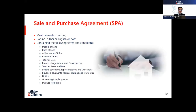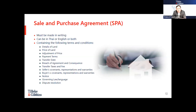Once land due diligence has been completed and you are satisfied with the results, the next step is to enter into the sale and purchase agreement. The SPA should contain the following key terms: the agreement must be made in writing, in Thai or English or both languages. If both languages are used, please ensure you specify the prevailing language; otherwise, the Thai version will be used in court. The SPA should include details of the land, price, any price adjustment mechanism in the event of new official measurements of the land.